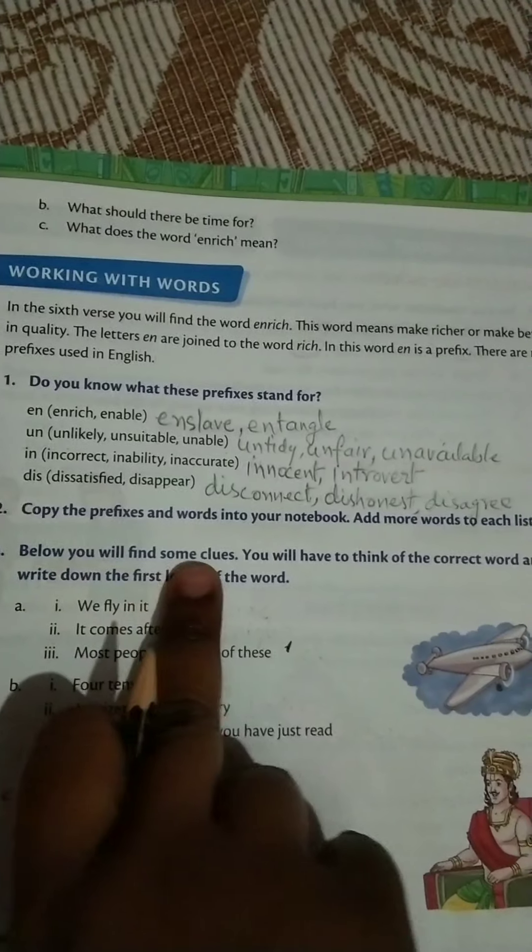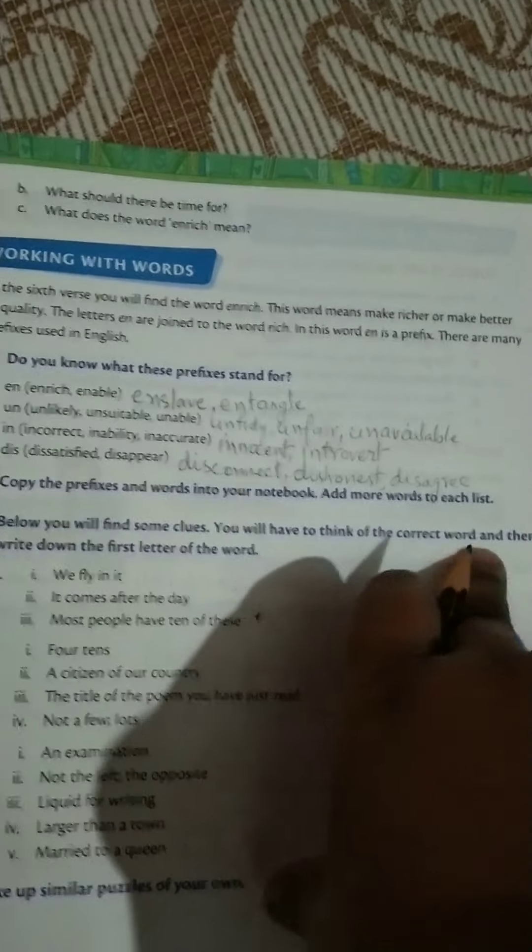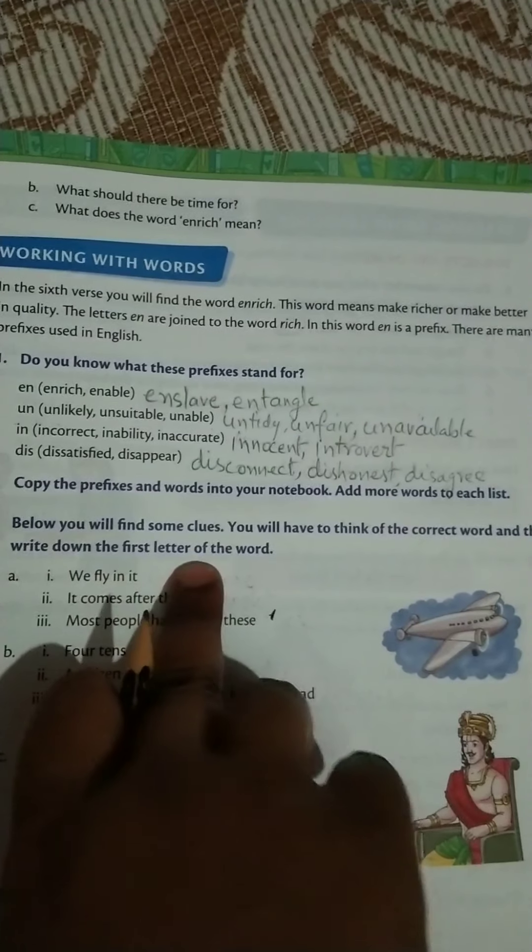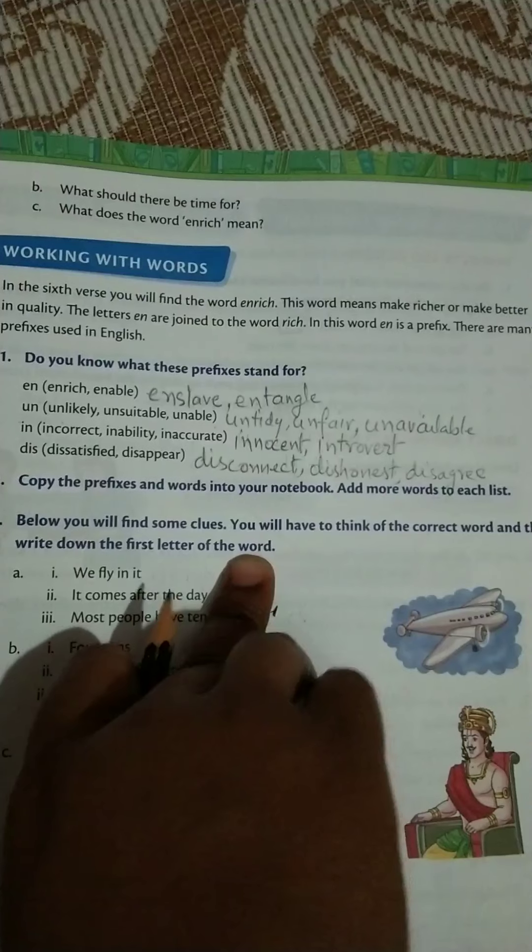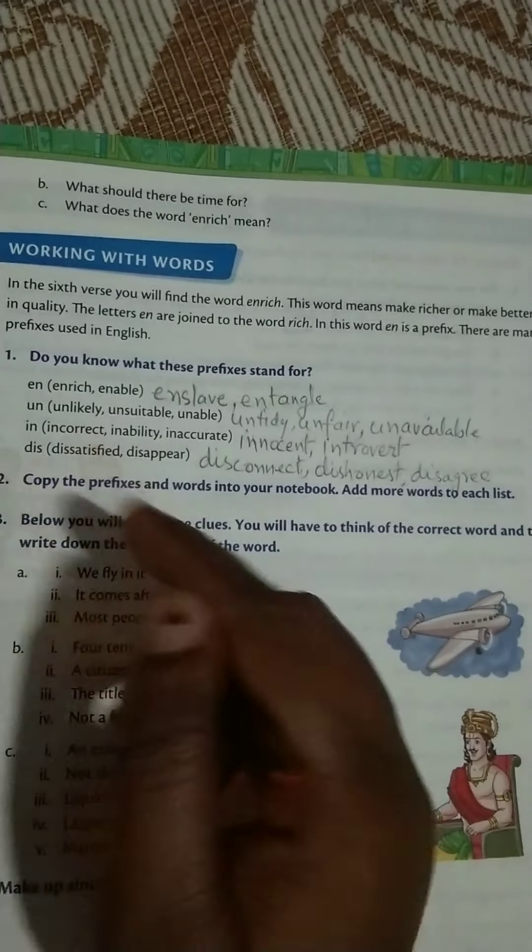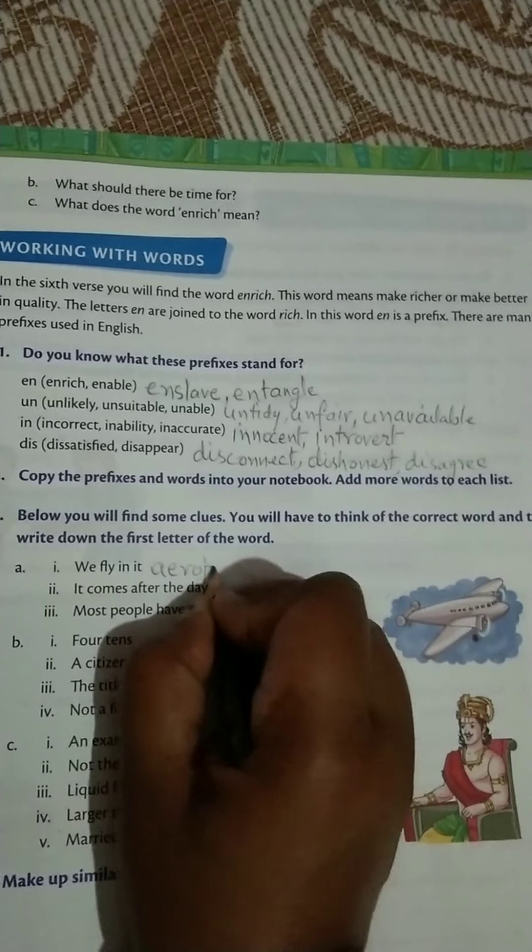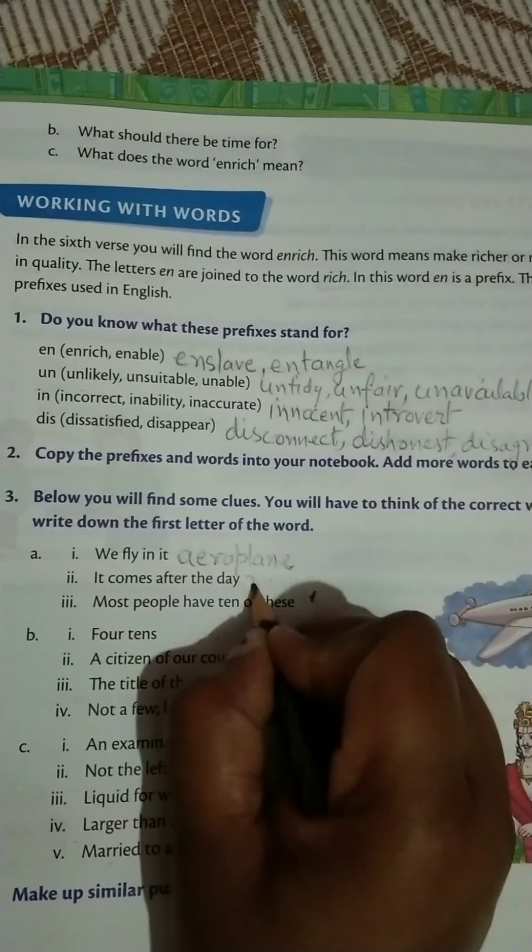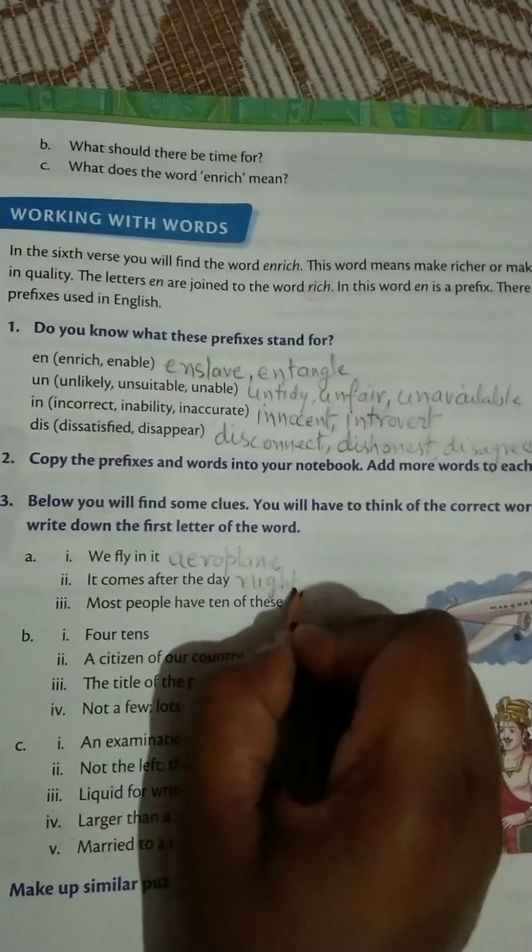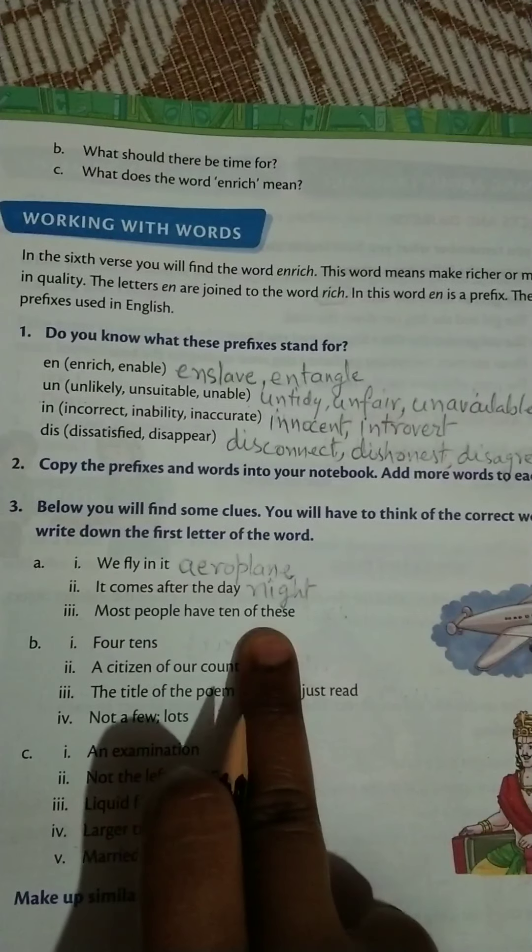Below you will find some clues. You will have to think of the correct word and then write down the first letter of the word. We fly in it - it is aeroplane. Come to the next. It comes after the day - it is night. Next is, most people have ten of these - it is finger.